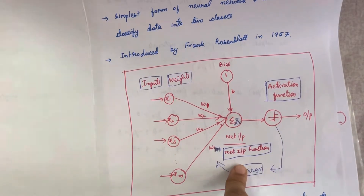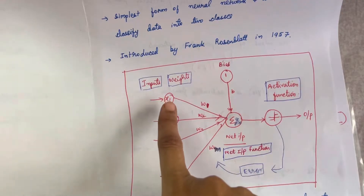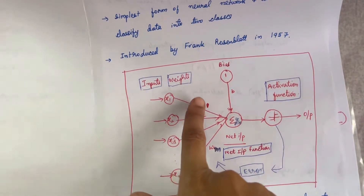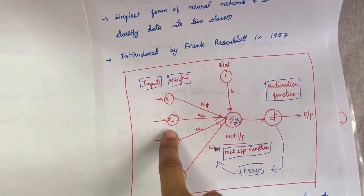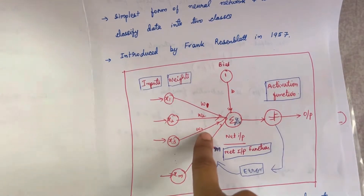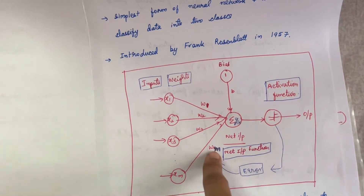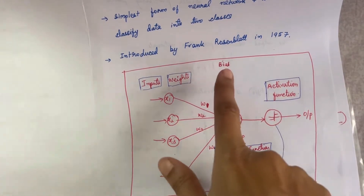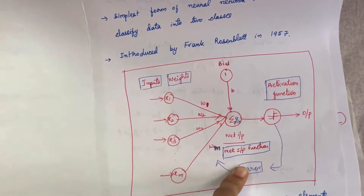The next is the net input function. Net input function is calculated by multiplying the input values and the weight values. The formula will be: x1·w1 + x2·w2 + x3·w3 + ... + xm·wm + 1·b, and that will give you your net input function.